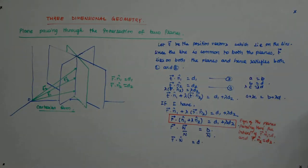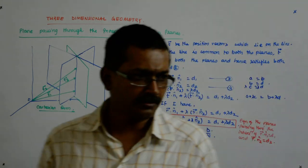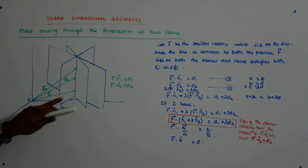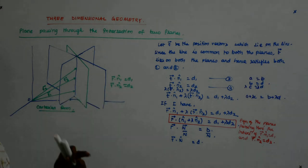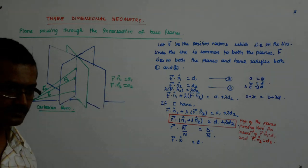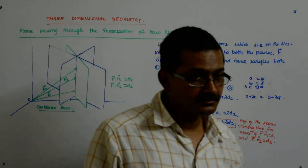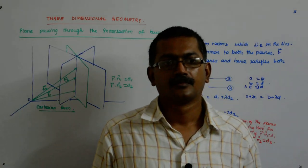So first of all convert them into the scalar form and we know whenever this is a unit vector, the coefficients of ijk become what? Direction cosines.